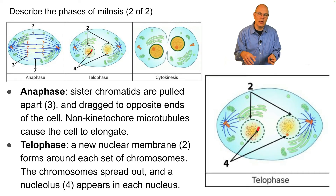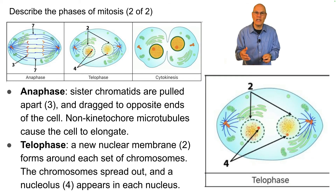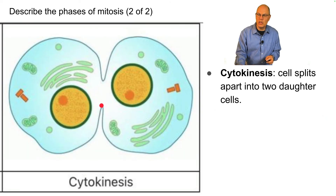The chromosomes spread out so you can't really see them anymore, and a nucleolus reappears in each cell — it disappeared during mitosis. The nucleolus makes ribosomes, and ribosome production shuts down during most of mitosis. Finally, during cytokinesis, the cell splits apart into two daughter cells.